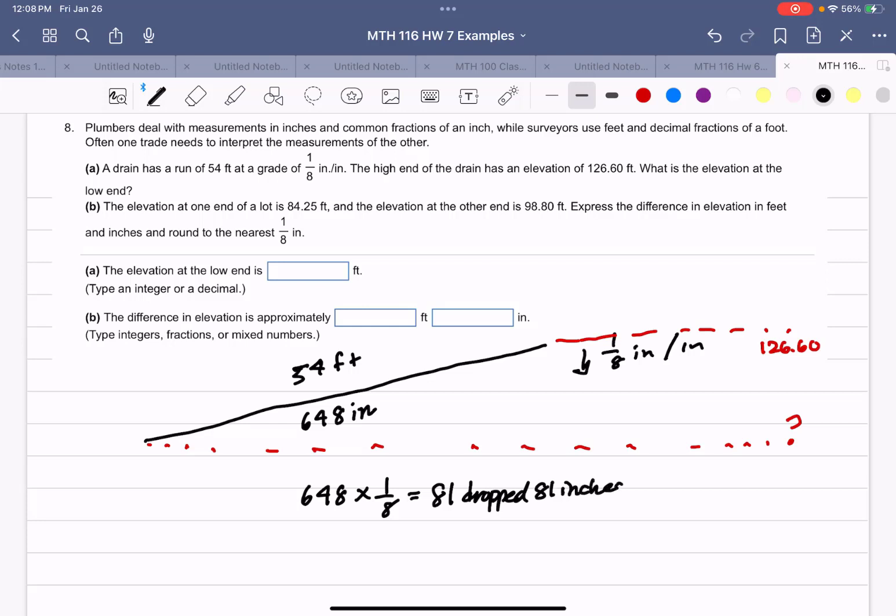But they want it in feet, so we've got to divide that by 12, and that's 6.75 feet. So we've got the high end, 126.60, minus the low end, 6.75, and it is at 119.85 feet. So we've changed it back to feet, and they said do it as a decimal. They didn't tell us what to round to, so we're going to put 119.85.